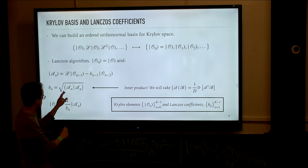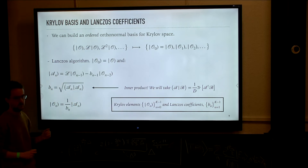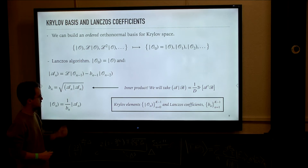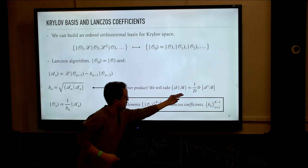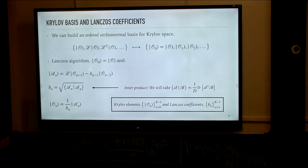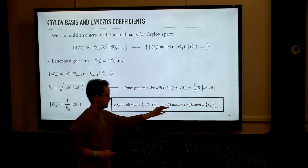The norm of this new element that we have built is called a Lanczos coefficient. The choice of inner product is actually important: apart from the initial condition and the Liouvillian, the inner product is the third ingredient this algorithm needs. Here we take as inner product the two-point function at infinite temperature, or the Frobenius product. The output of this algorithm is just a set of orthonormal Krylov elements and Lanczos coefficients.